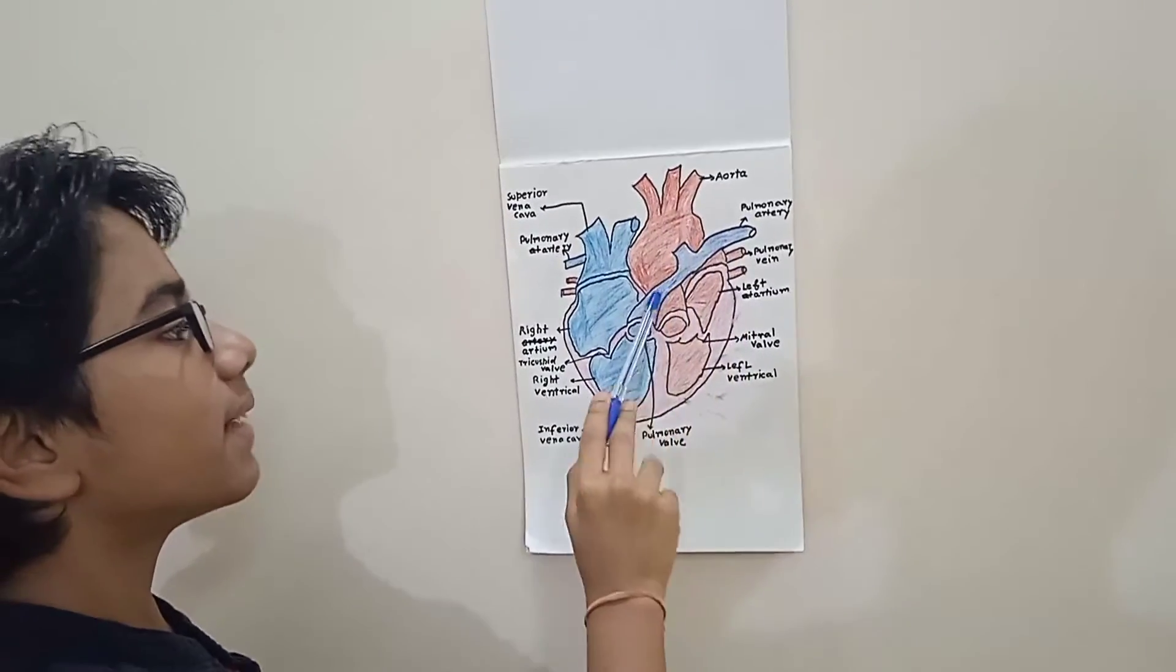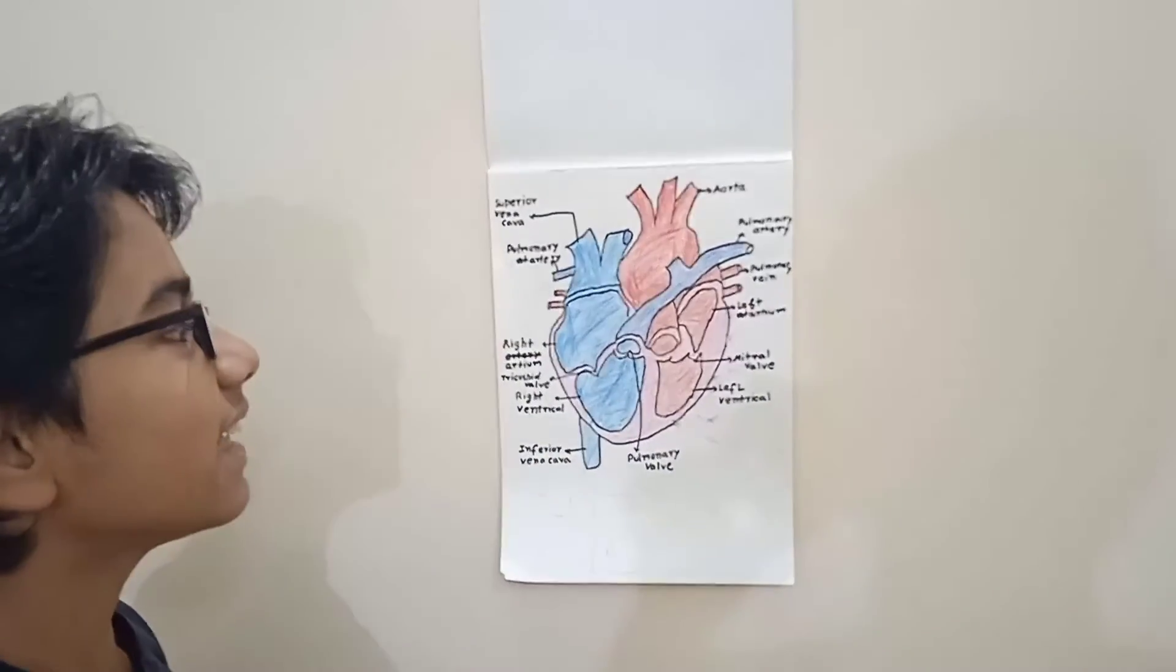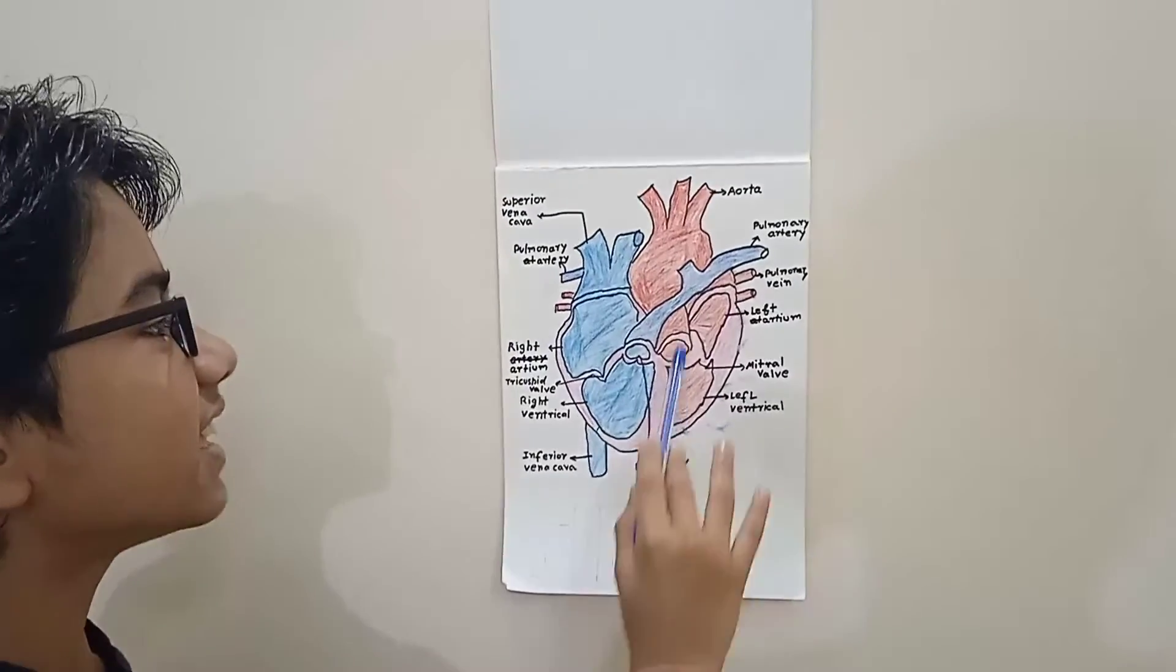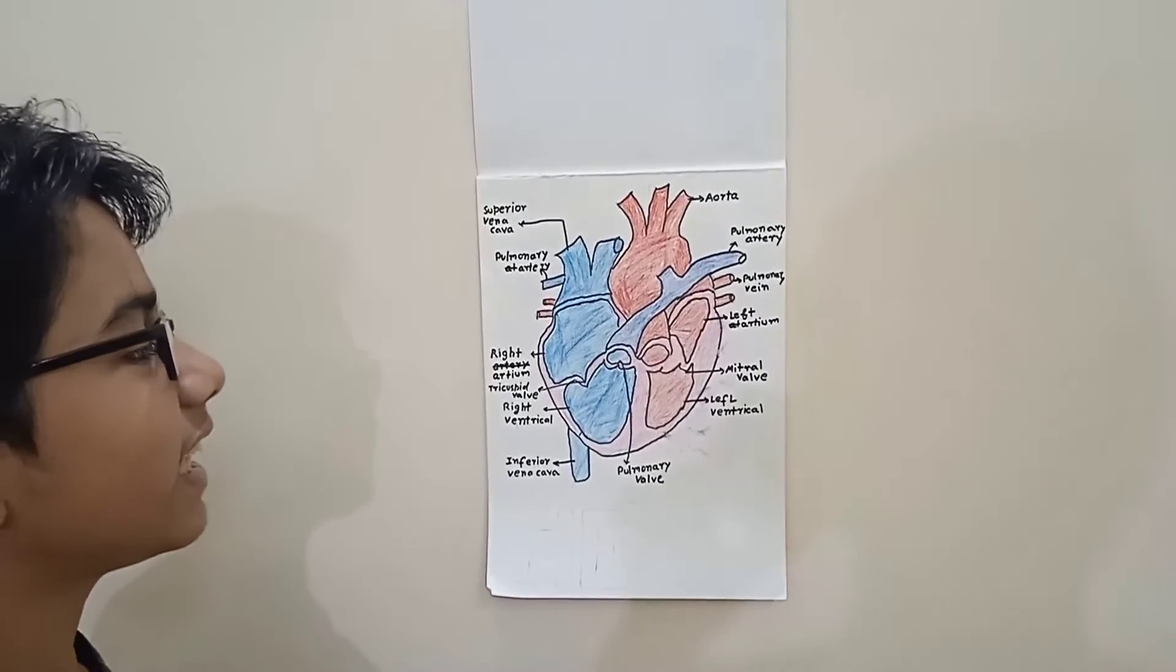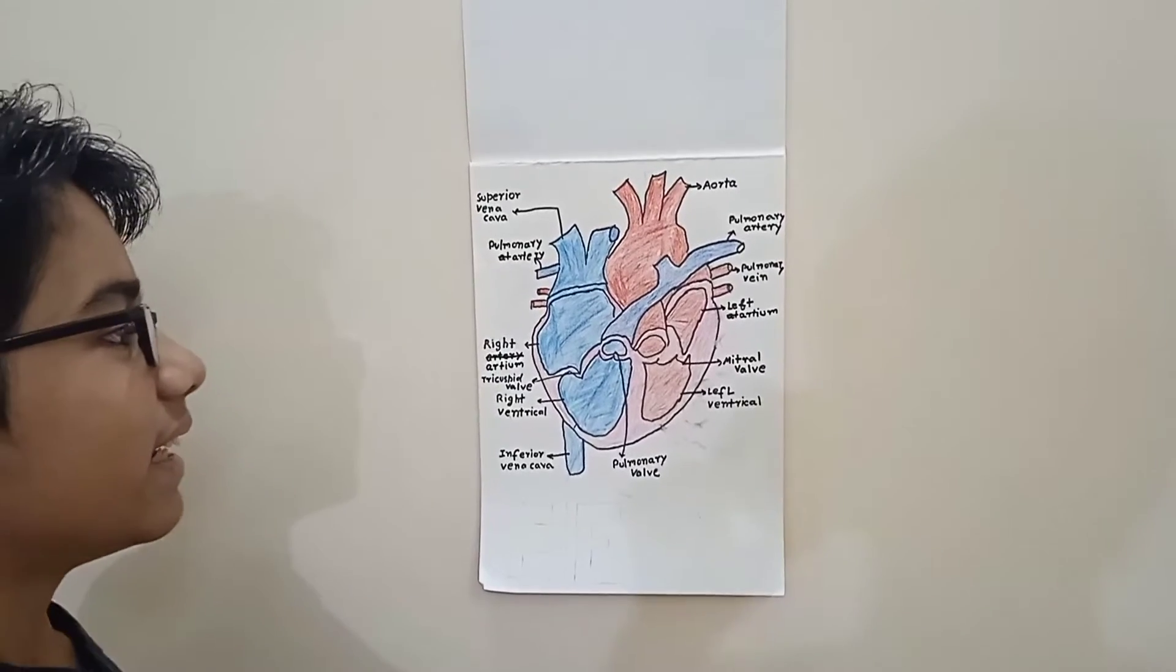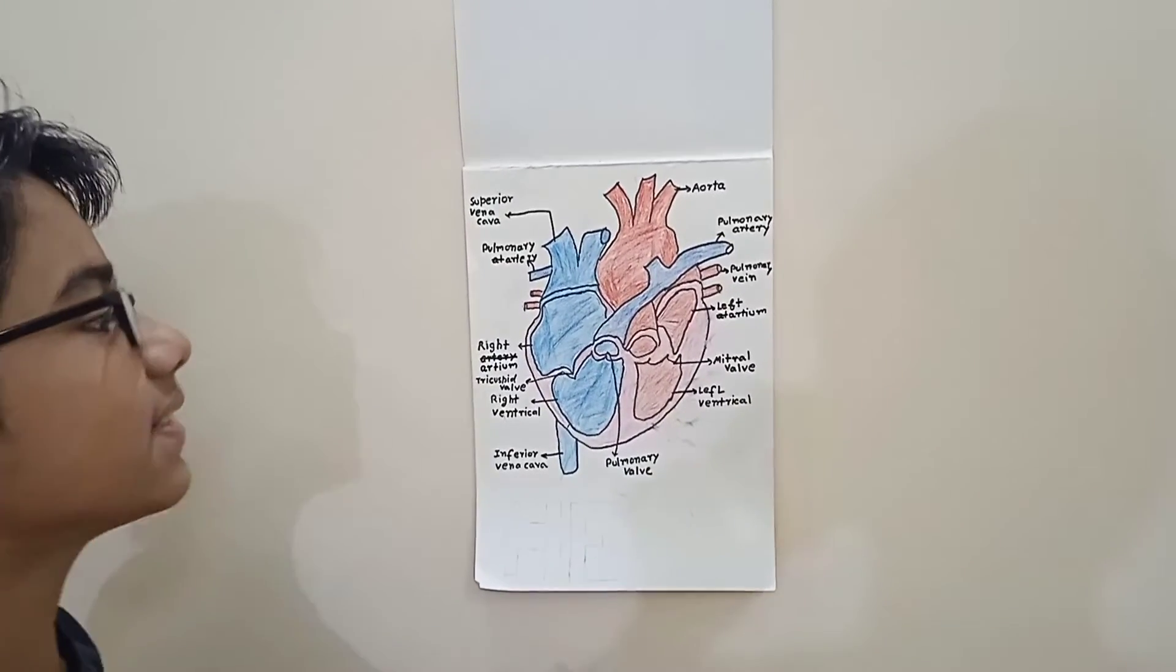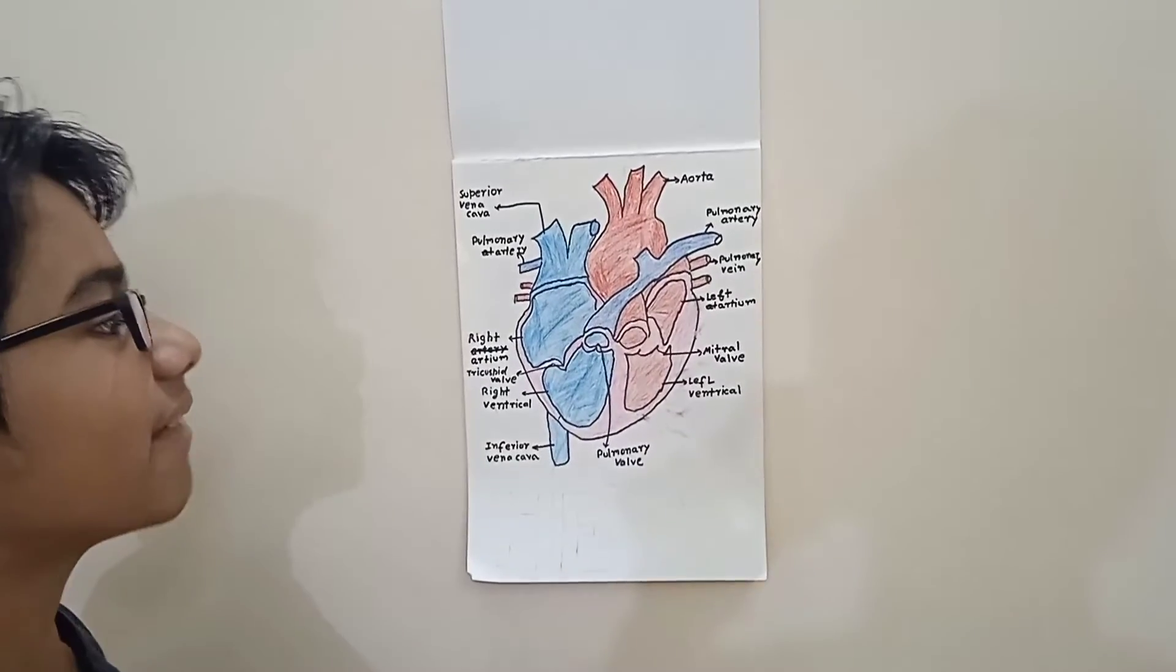And then by pulmonary artery directly it will go to the lung. Why lung? Because if the deoxygenated blood will go to the lung, then it will become oxygenated. How? Because it will remove the carbon dioxide and take in oxygen, it will mix that oxygen, then it will become oxygenated.